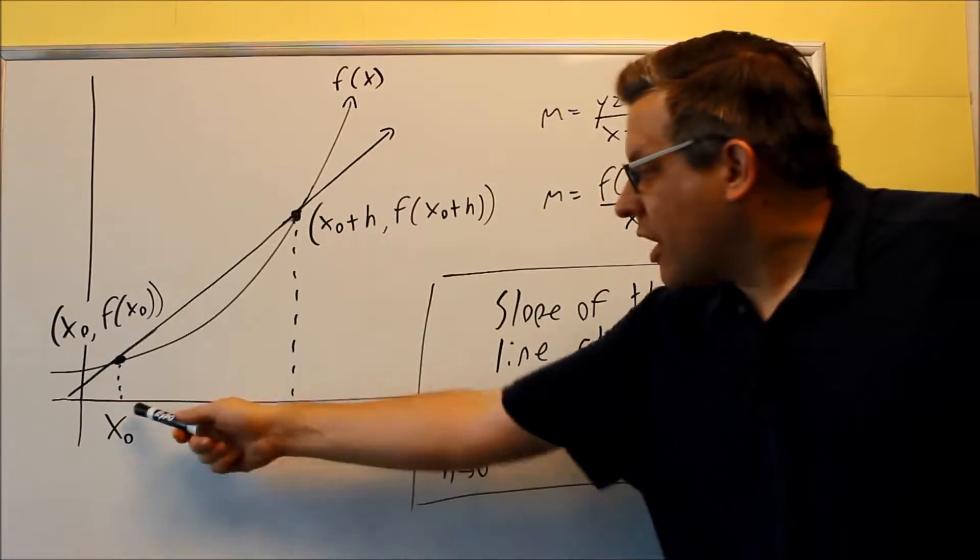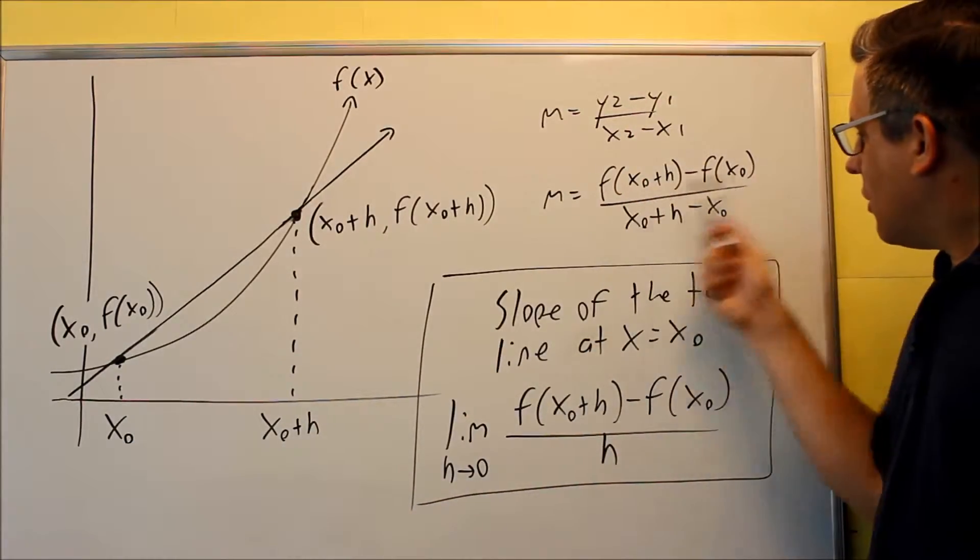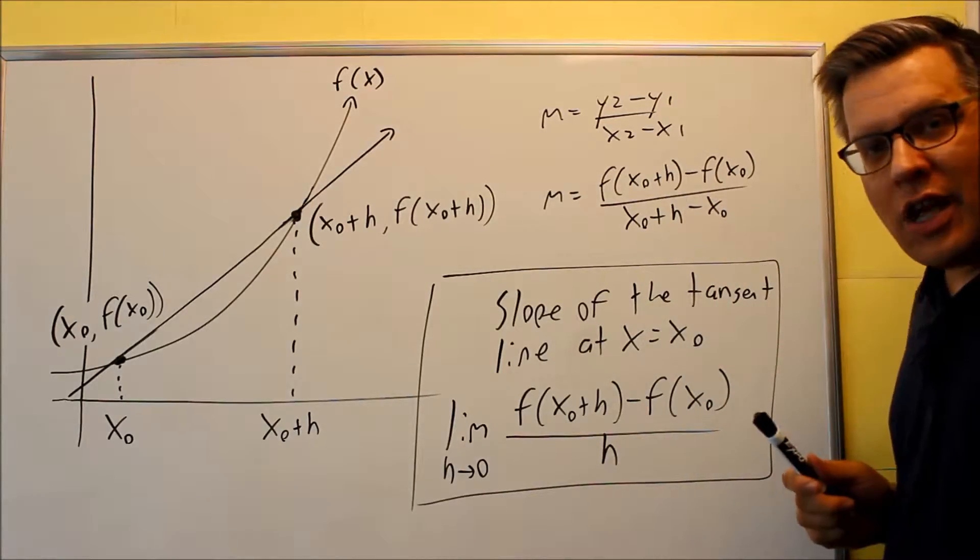Down below, we're subtracting the two x values. x sub zero plus h minus x sub zero. Those x's cancel and we're left with an h.